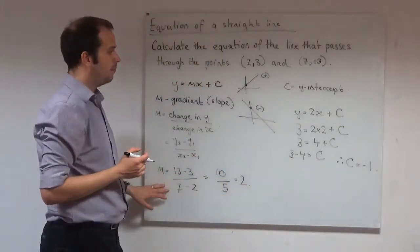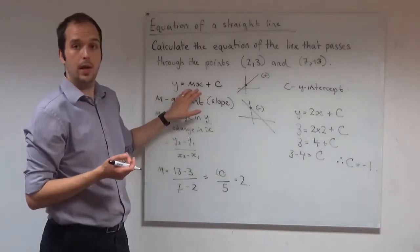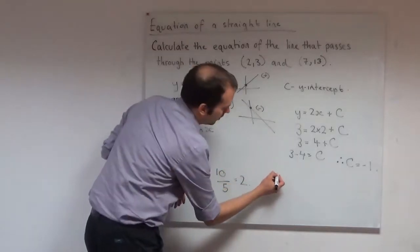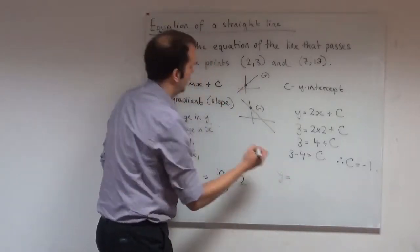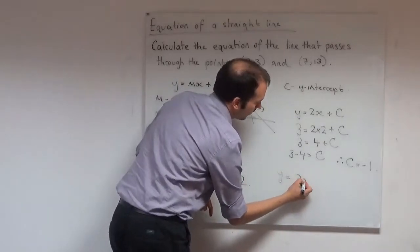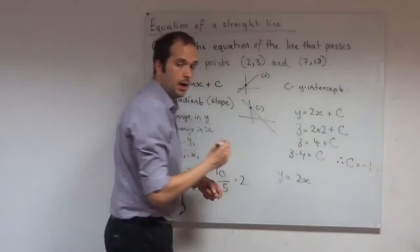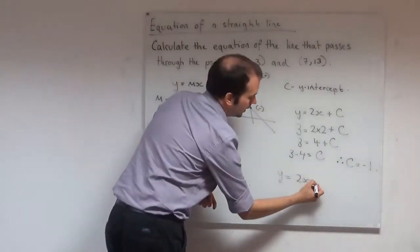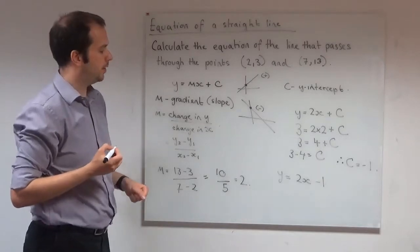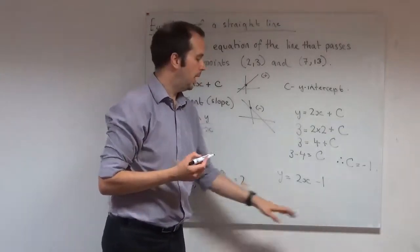So I have my c. I have my m. I've got everything I need. I can now write down the equation of the straight line that passes through these two points. It is going to be y is equal to m, which was 2. So it would be 2x plus c. c was equal to minus 1. So I can write that as minus 1 there. So the equation of my straight line is y is equal to 2x minus 1.